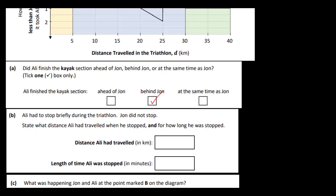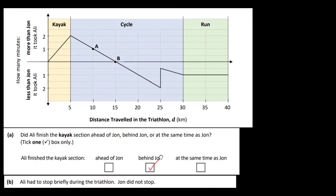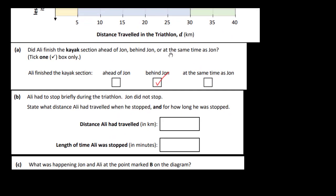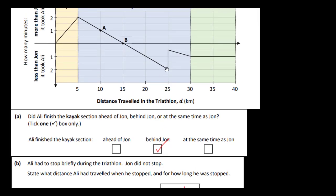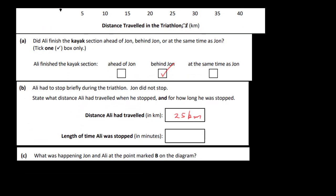OK, next section. Ali had to stop briefly during the triathlon, John did not stop. State what distance Ali had travelled when he stopped, and for how long he was stopped. OK, so this is where Ali actually stopped here, and it's at 25km, so you've got to put 25km in here. How long did he actually stop for? Well, it's, let's see, one and a half minutes, so that's one minute from here to here, and this is half a minute, so it's one and a half minutes.